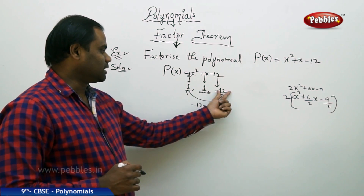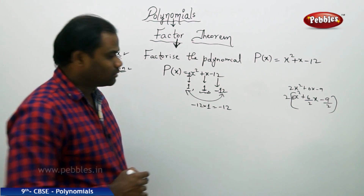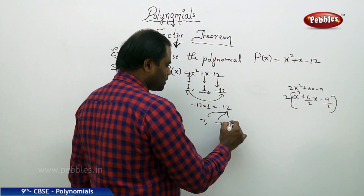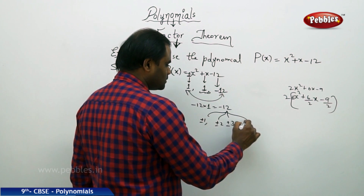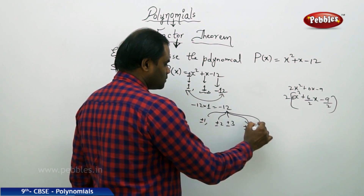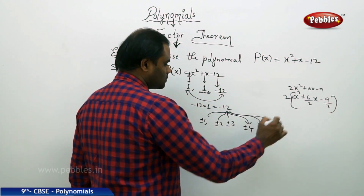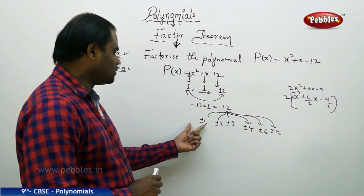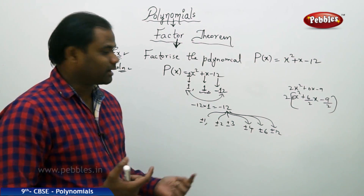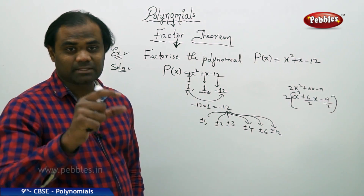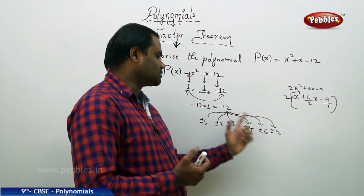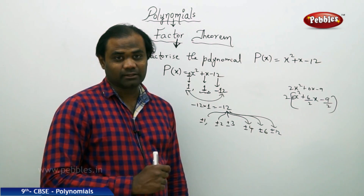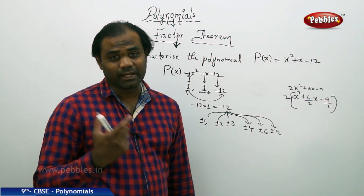So once I multiply the first and the last coefficients, I get the value as negative 2L. The possible factors of minus 2L include plus or minus 1, plus or minus 2, plus or minus 3, and plus or minus 4. I get the possible factors to be plus or minus 1, plus or minus 2, plus or minus 3, plus or minus 4, plus or minus 6, and plus or minus 2L — so I have possibly 6 different factor pairs for minus 2L.